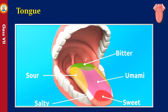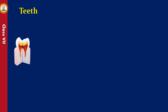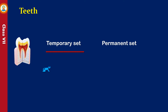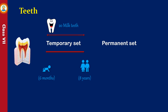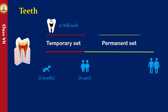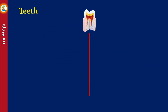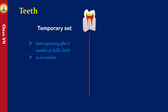Human beings have two sets of teeth in their lifetime: a temporary set and a permanent set. In a child, from the age of six months to eight years, 20 milk teeth grow, which are the temporary set of teeth. These milk teeth are replaced by a permanent set after six years of age. Milk teeth start appearing after six months of a child's birth; they are 20 in number, are shed off, and do not contain molars.